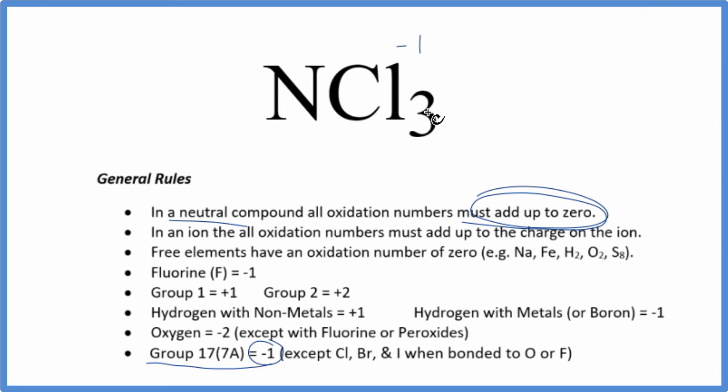Since we have 3 of them, 3 times minus 1, that's minus 3. This has to be plus 3, so this will all add up to zero.